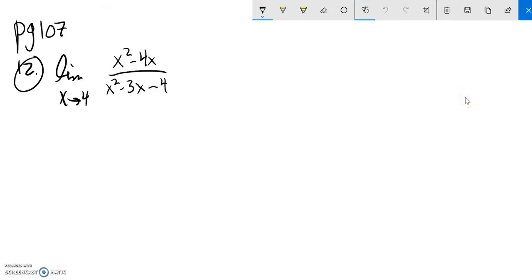This is Math 151 Calc 1, and we're just going to do number 12 from page 107 right now. We're asked to find the limit as X approaches 4 of this value.